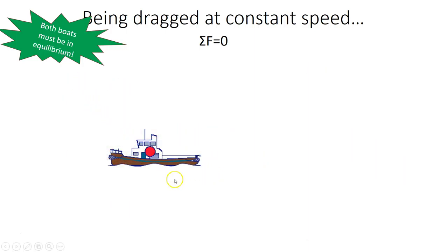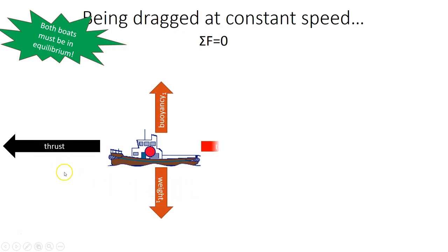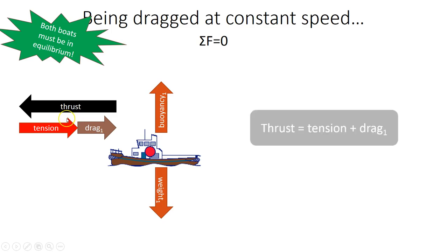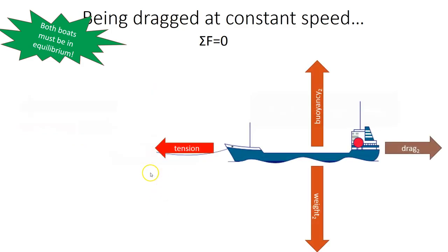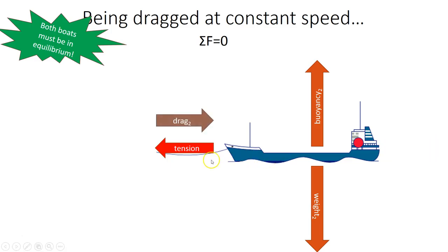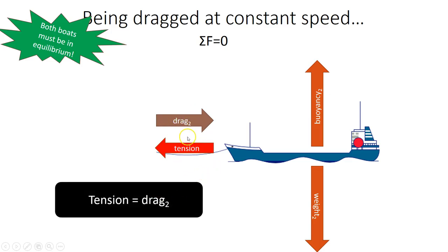If we think about the tugboat on its own, we've got weight and buoyancy, and then we've got this thrust force, the tension in the cable, and the drag force acting on that boat. Because we know it's in equilibrium, we can say that the thrust force is equal to the tension force plus the drag force. If we think about the forces on the larger boat, the second boat, then equally that is in equilibrium. So the tension force is equal to the drag force acting on that — those are the only horizontal forces. So we can say tension equals drag two.